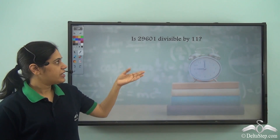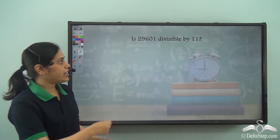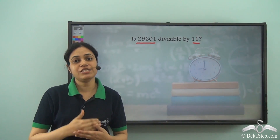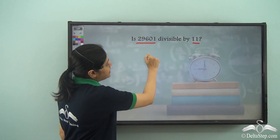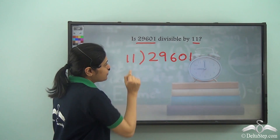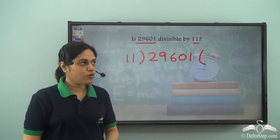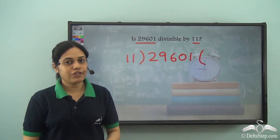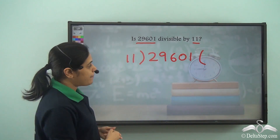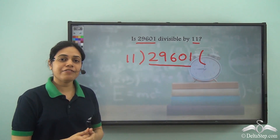Let me ask you a question. Is 29601 divisible by 11? I need to find whether this number is divisible by 11 or not. I need to divide 29601 by 11 and check what the remainder is. If the remainder is 0, the number is divisible by 11. If the remainder is not 0, the number is not perfectly divisible by 11. But to find that, I need to do this huge division of a five digit number by 11.